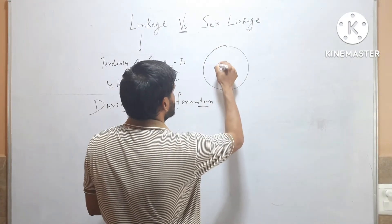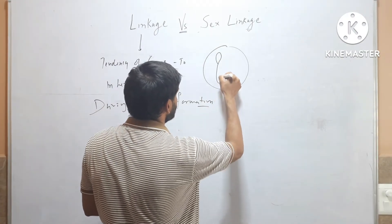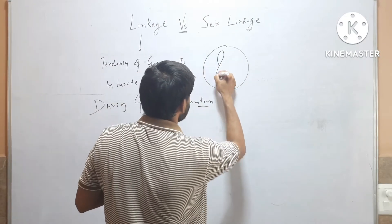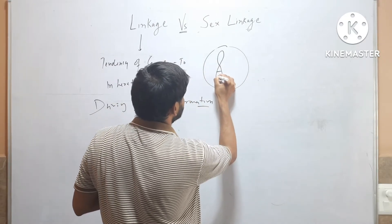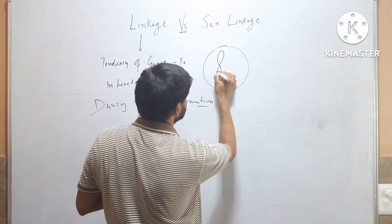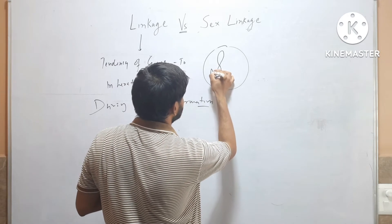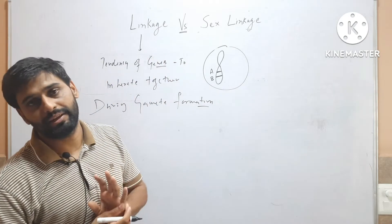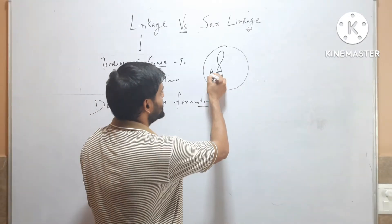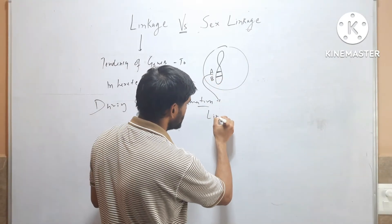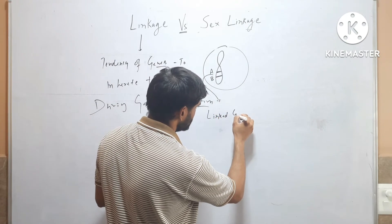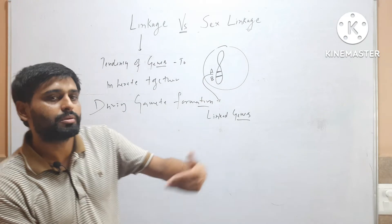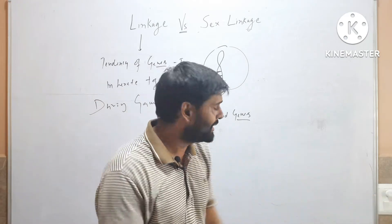When two genes in a chromosome are present together, these genes will be called linked genes. And if they are inherited together, then this phenomenon will be called linkage.